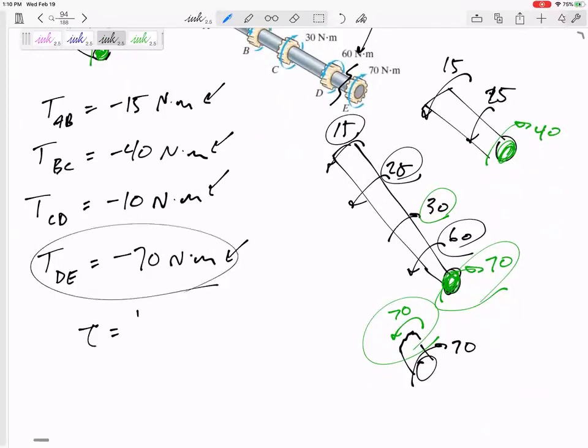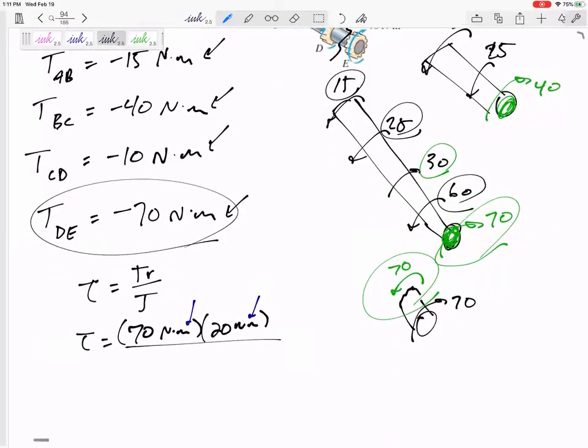So the shear stress would be TR over J. 70 Newton meters. We could put negative there, but it asks for the absolute maximum. 70 Newton meters, an R of 20 millimeters. Let me be careful here. And then a J. J is pi over 2 times R to the fourth. I've got meters and millimeters and millimeters to the fourth.